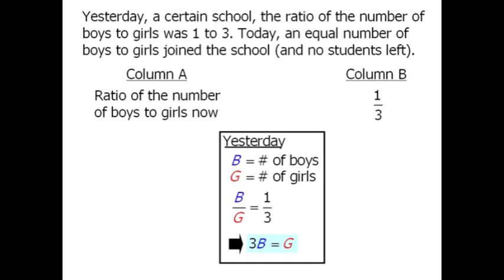So for column A then, the ratio of the number of boys to the number of girls will be equal to B plus X over G plus X. We're comparing this ratio with column B, one-third.